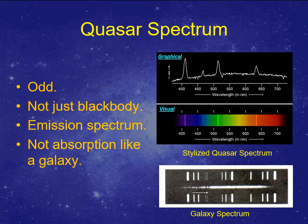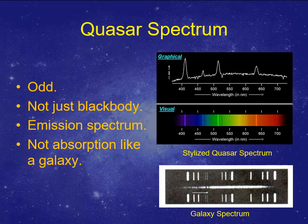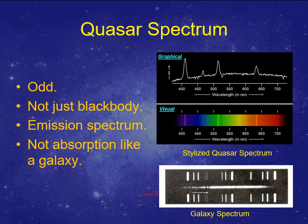The spectrum made no sense at all. Normally with stars or galaxies, you get an absorption spectrum. But here we had an emission spectrum instead. Stars and galaxies have absorption spectra, so this emission spectrum didn't seem to match anything we knew.